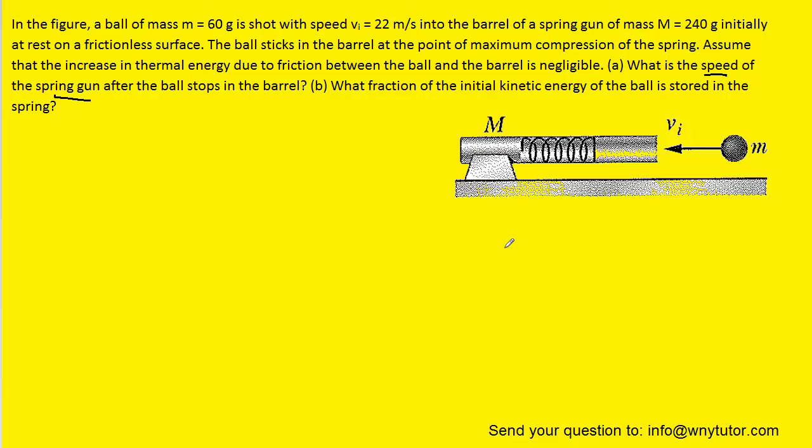For part B we need to examine the energies that are present both before the collision and then after the collision. We know that before the collision the ball is moving with that speed of 22 meters per second, so we can say that there initially is kinetic energy.